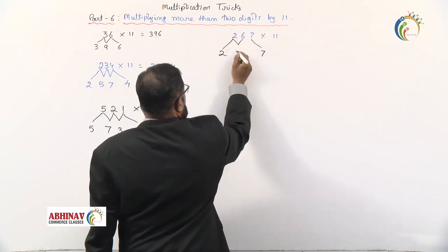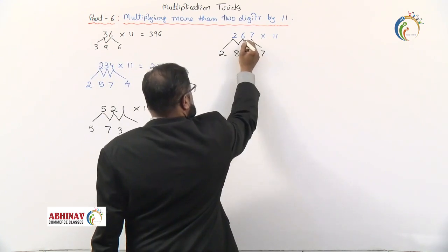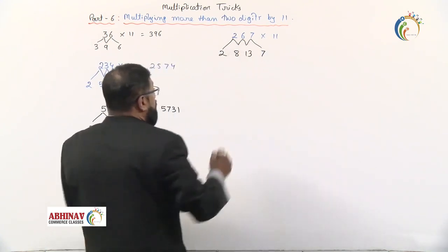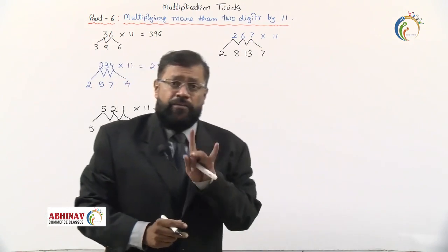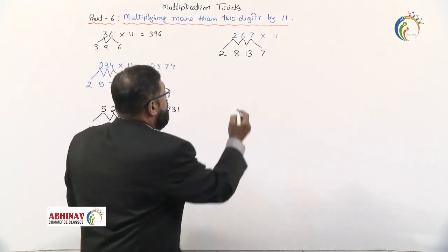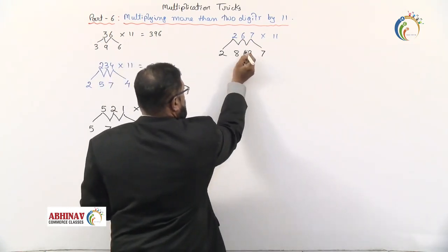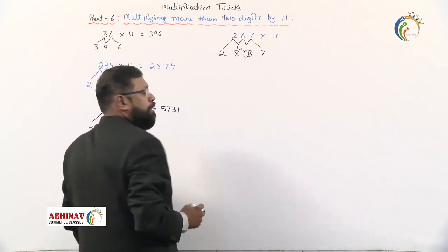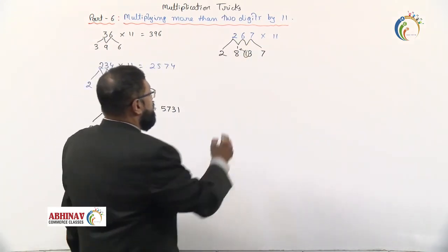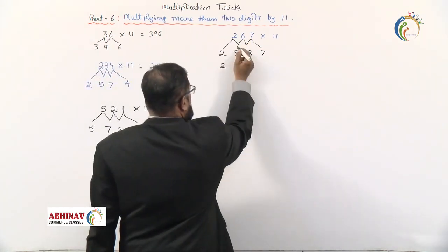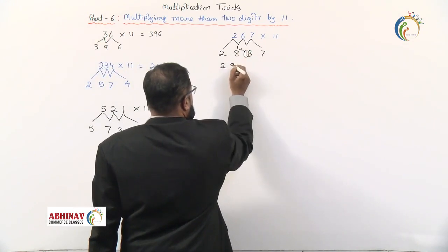2 plus 6 is 8, 6 plus 7 is 13. But we can't write 13 there; we should write only one digit. So we carry forward the 1 to the previous number. Now 2, this carry forward 1 plus 8 is 9, this 3, and 7. So it comes to 2937.